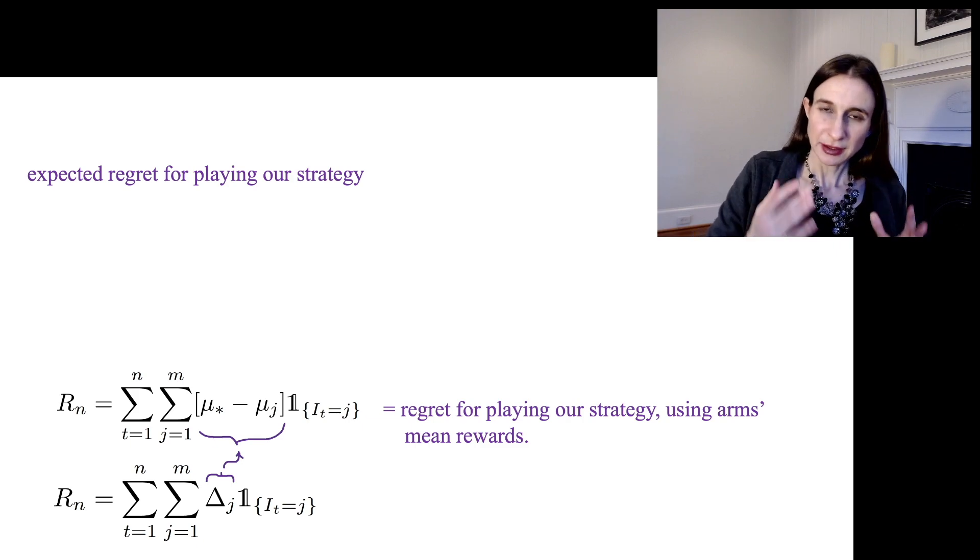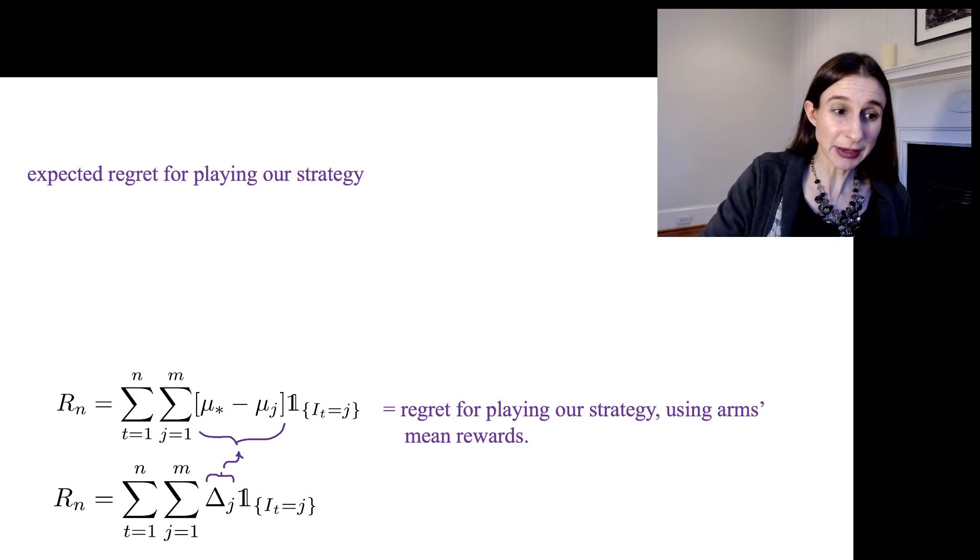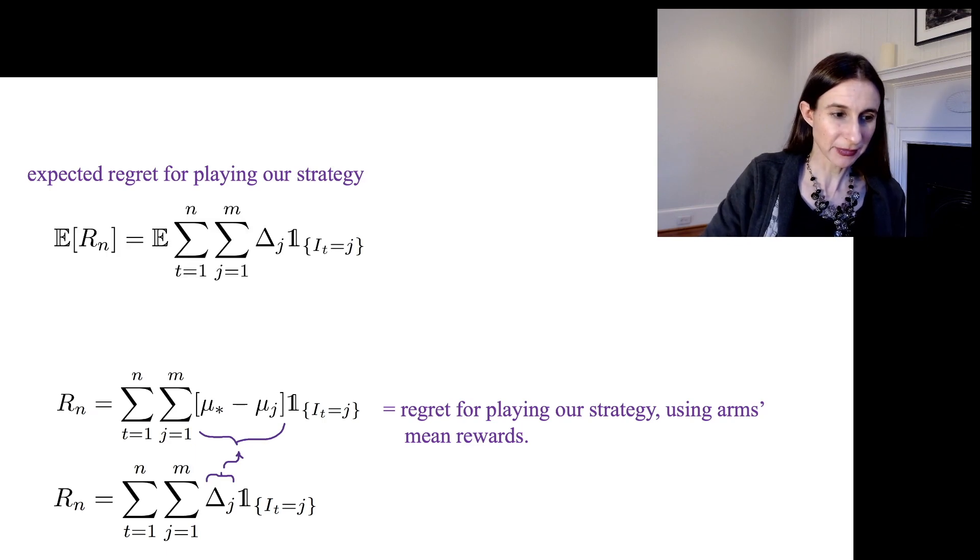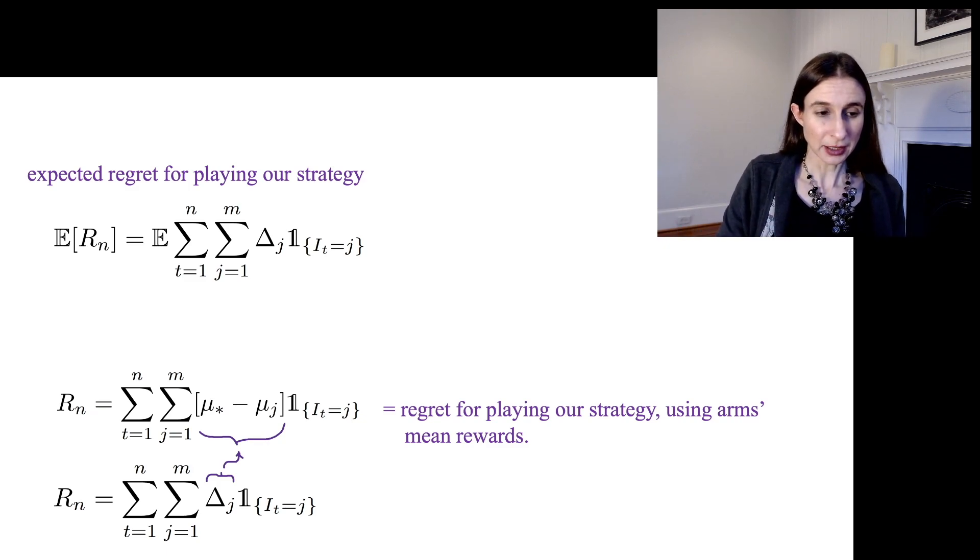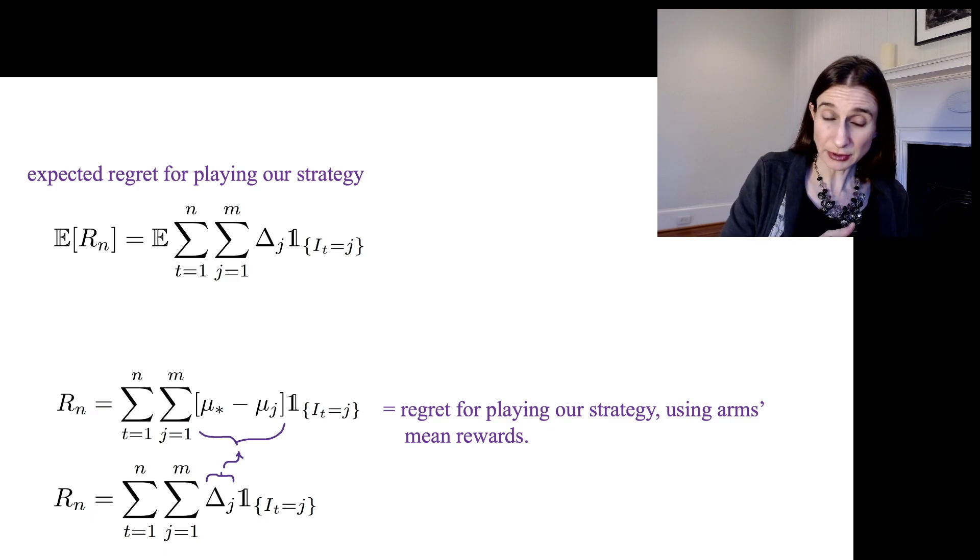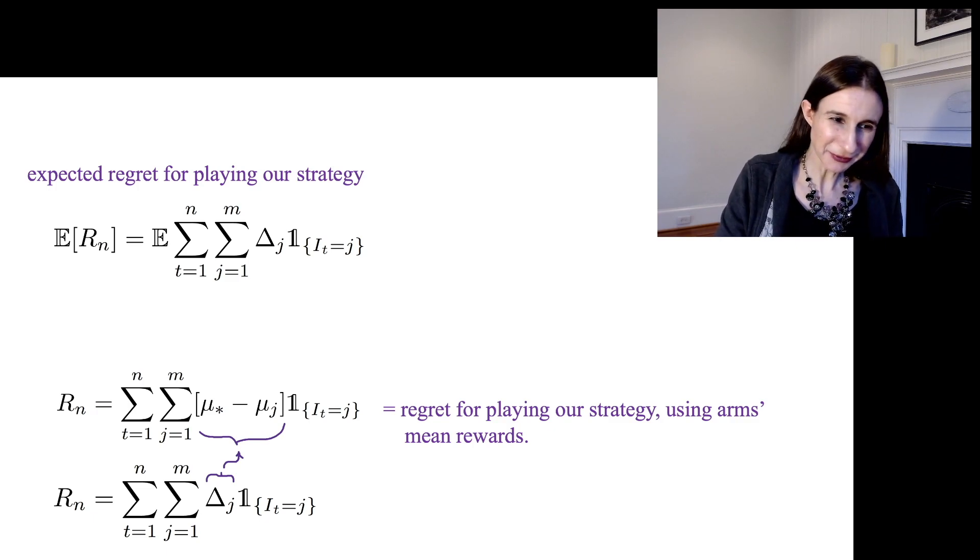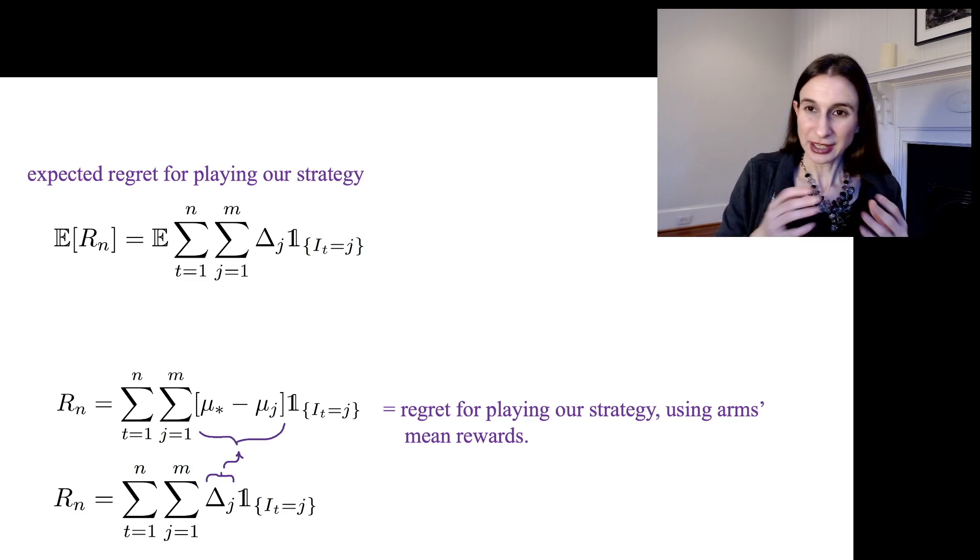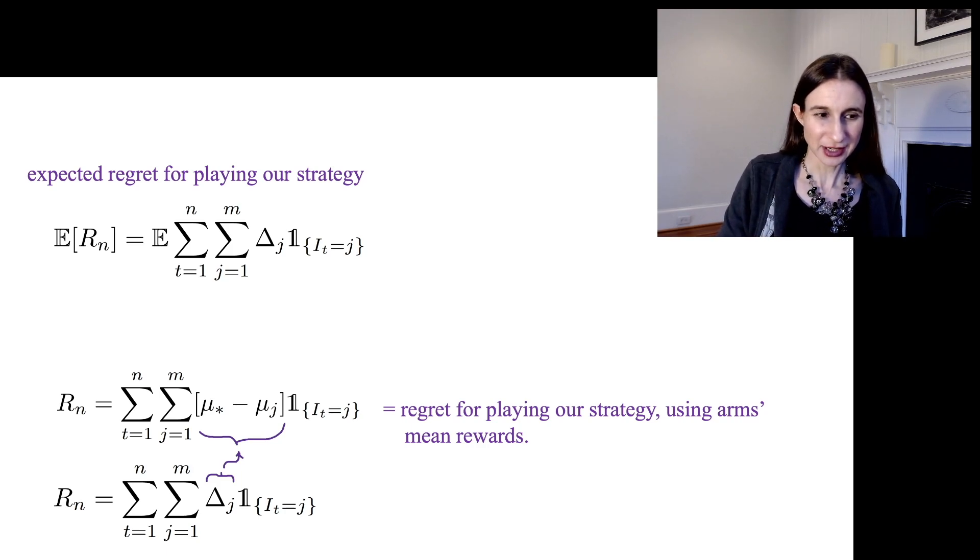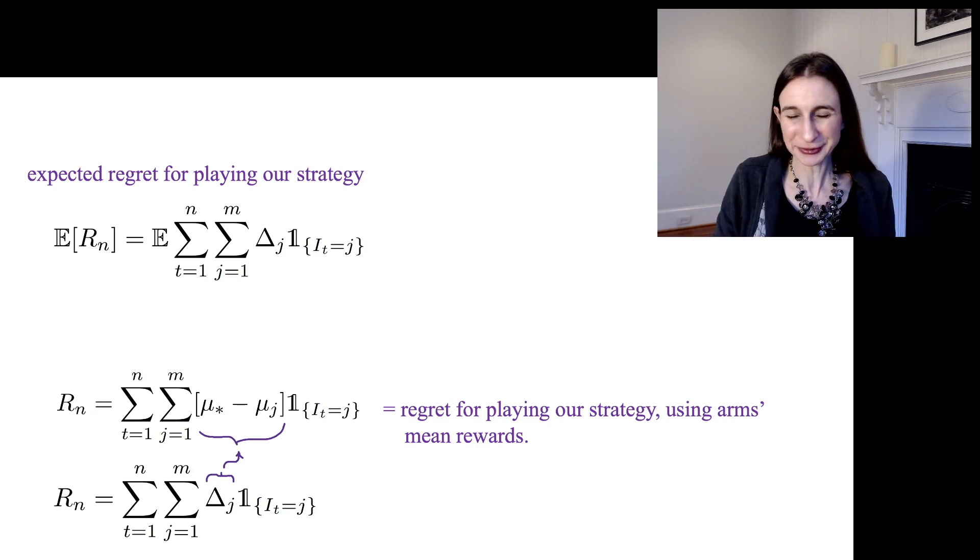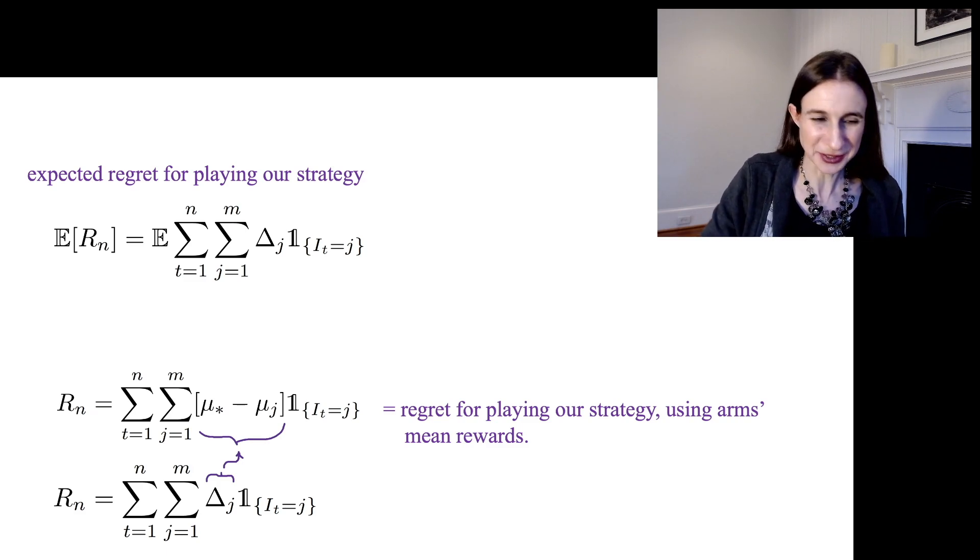The thing we want to bound in this theory is the expected regret for playing our strategy. The expected regret is the expectation over all the randomness in the problem, and then it's a sum over time, sum over arms, and then the regret for having chosen arm j if we indeed chose arm j. The expectation is over all randomness in the problem, including the randomness in which arm gets chosen by the algorithm, and for epsilon greedy there's a random choice of arm and so on.